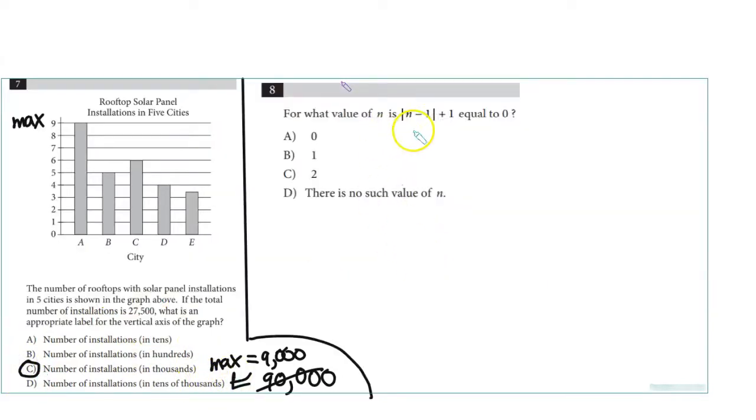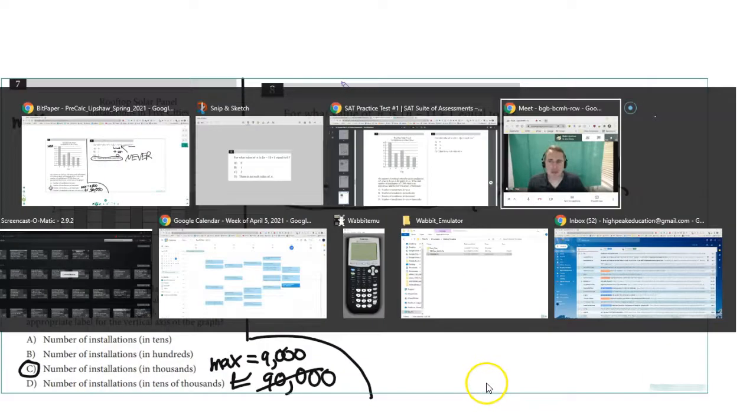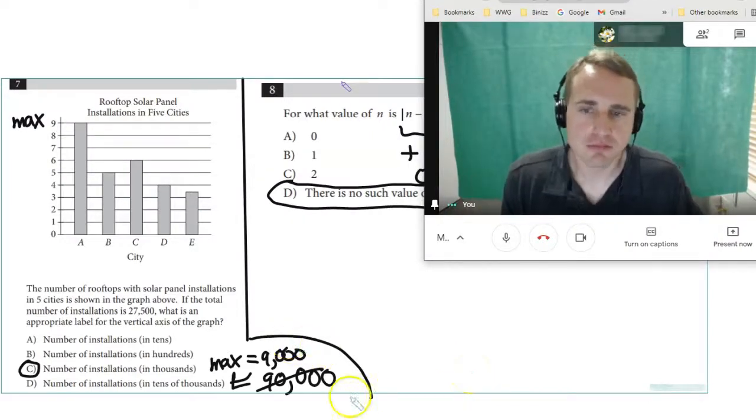Number 25: For what value of n is |n-1|+1 equal to 0? Do you notice that this is always going to be positive or 0? If you add 1, is that ever going to give you 0? Never! If you have a positive number or 0 and you add 1, you'll never have 0.